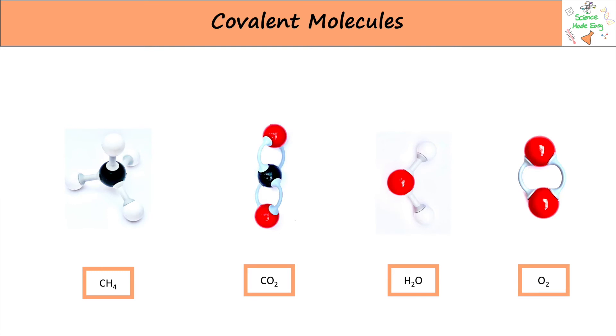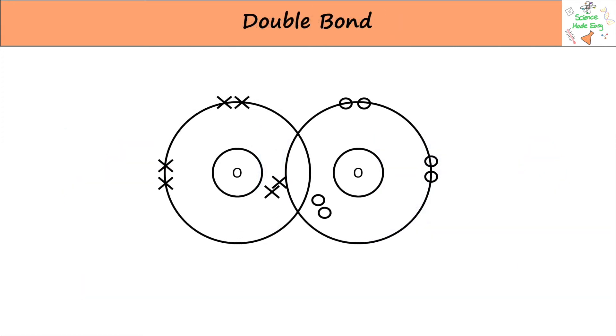You might notice that carbon dioxide has two sticks going to each oxygen. This is because they form double bonds. Each atom gives two electrons instead of only one.